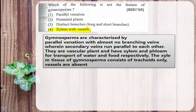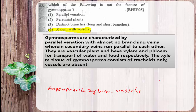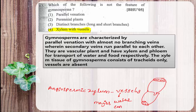Both xylem and phloem are complex tissues. In angiosperms, the xylem consists of vessels — cylindrical structures arranged one above the other. These vessels have perforation plates and are the major water-conducting elements in angiosperms. The xylem of gymnosperms, however, is without vessels. So the right answer for this question is option 4.